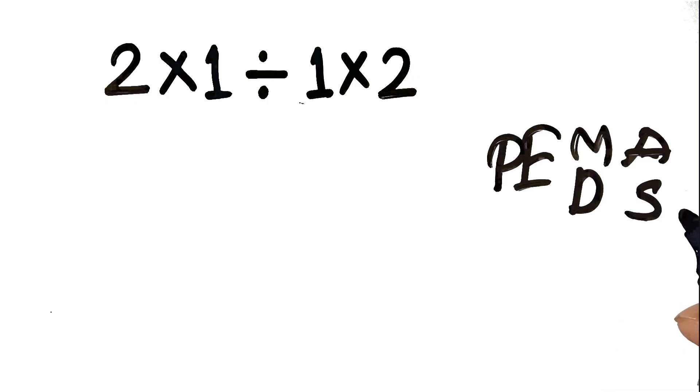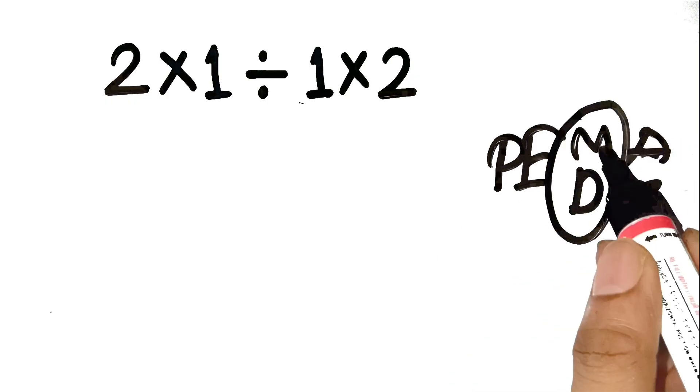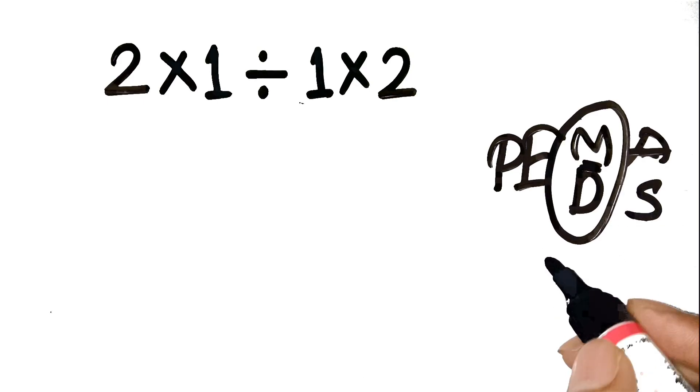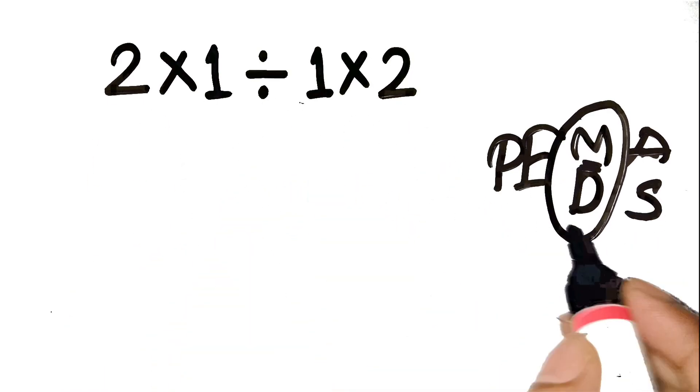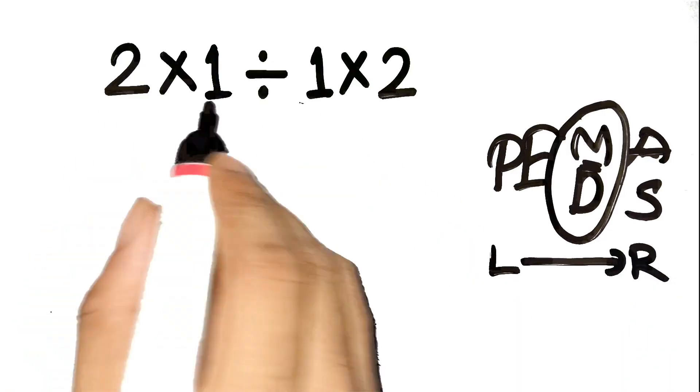And remember, multiplication and division have equal priority. You don't do all the multiplications first or all the divisions first. You go from left to right as they appear.